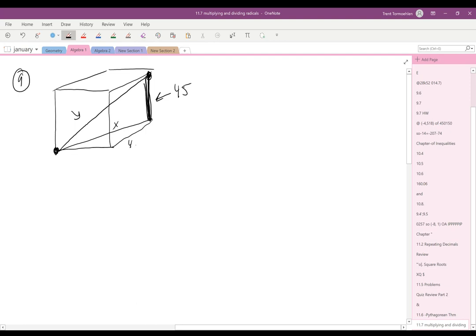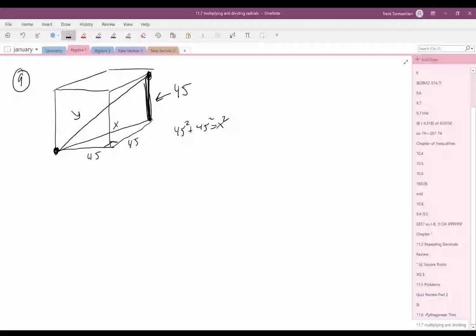So, if this is 45 here, and this is 45 here, and this is a right angle because the base is a square, then x is just the side length there, and so you can do 45 squared plus 45 squared equals x squared. It did say round to the nearest hundredth, and so we can do this using our calculator.